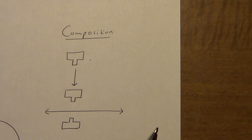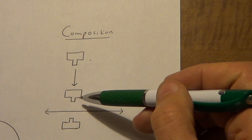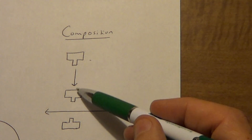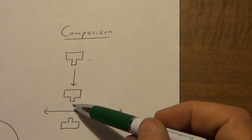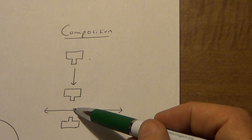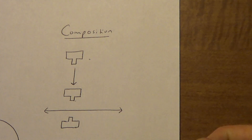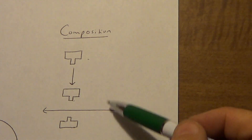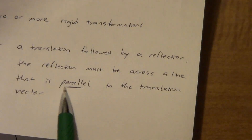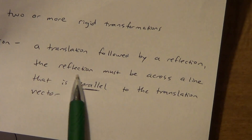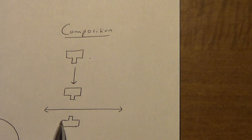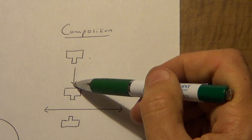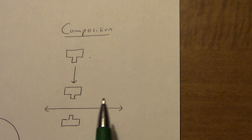A composition combines two or more transformations. This example is a translation followed by a reflection across that line. If you connect corresponding points, that segment is perpendicular to the line of reflection and the distances above and below the line are equal. However, this is not a glide reflection — because the line of reflection is not parallel to the translation vector, so the parallel condition is not met.